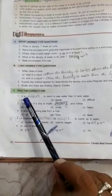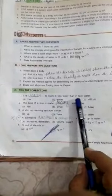First of all, I am going to discuss the short question that is C, pick the correct one. First answer will be it is easier to swim in sea water than in tank water.